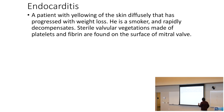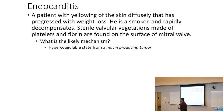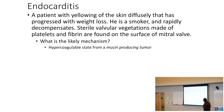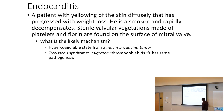A patient with diffuse yellowing of skin and weight loss who is a smoker has sterile valvular vegetations of platelets and fibrin on the mitral valve surface. This patient is in a hypercoagulable state from a mucin-producing tumor — painless jaundice points to pancreatic cancer. Pancreatic cancer causes a hypercoagulable state with platelet and fibrin depositions on the mitral valve, related to Trousseau syndrome — migratory thrombophlebitis.